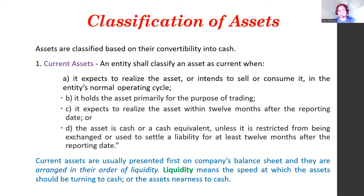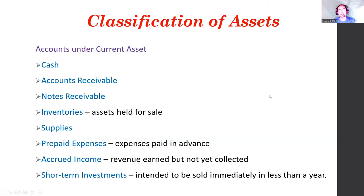Current assets are usually presented first on a company's balance sheet, arranged in order of liquidity. Liquidity means the speed at which assets can be turned into cash, or an asset's nearness to cash. On the balance sheet, current assets are arranged according to how easily they can be converted into cash.